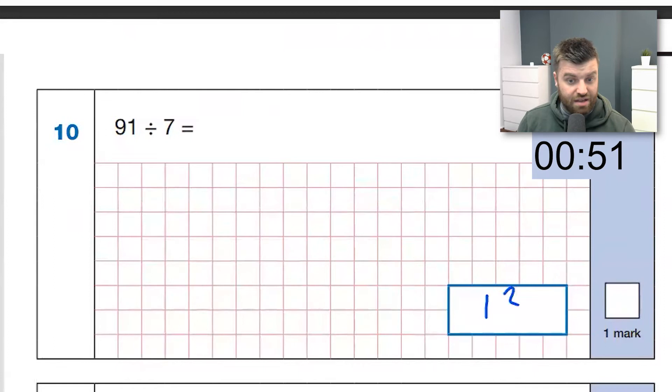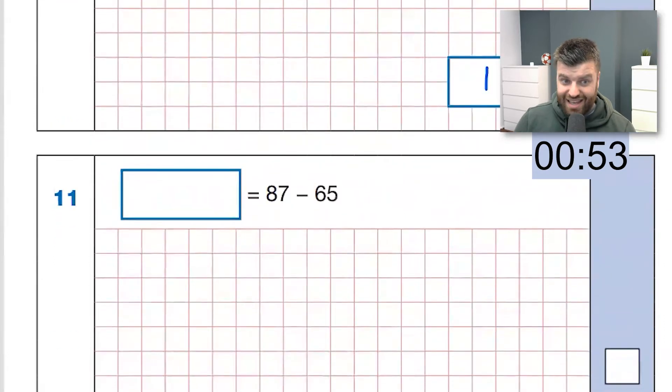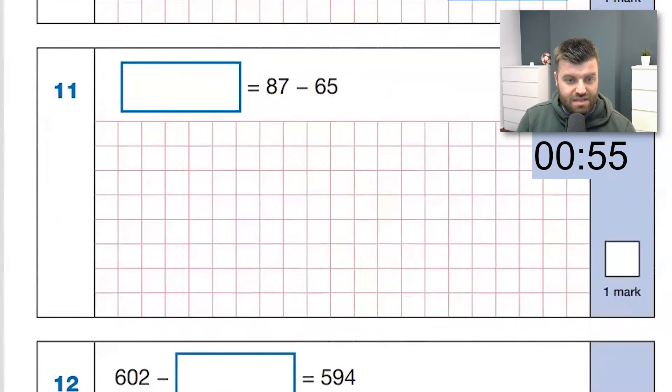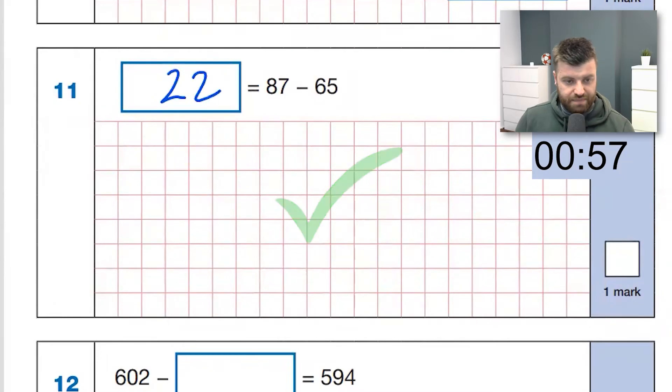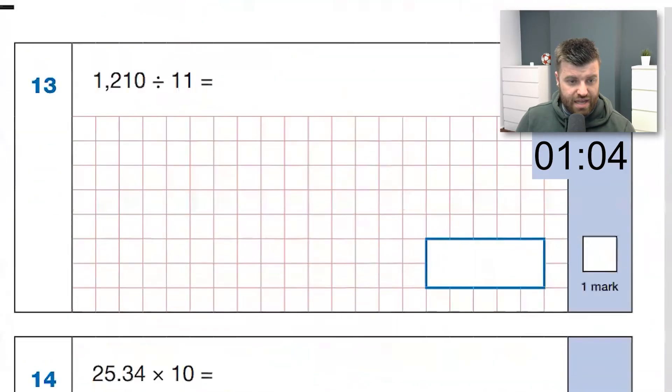Ninety-one divided by seven. That's 13, because I know 84 is 12 lots. 87, take away 65, two tens, two ones. Easy. Question 12, 602, take away 594. I'm just going to count on. It's going to be eight.